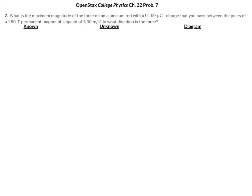Let's write down our knowns and unknowns. We know that the charge is 0.1 microcoulombs, the magnetic field is 1.5 Tesla, and the speed is 5 meters per second.